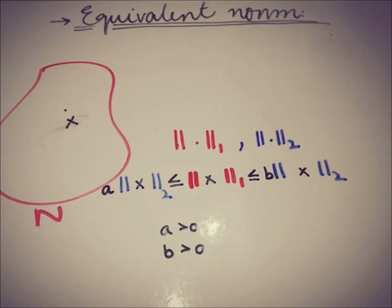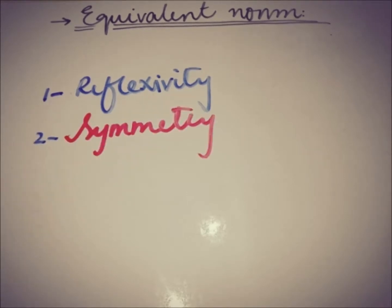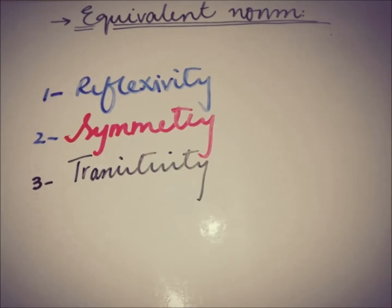Now we are going to see that the concept of equivalent norms in a normed linear space N is an equivalence relation. The three properties to verify are: reflexivity, symmetry, and transitivity. We'll deal with all of them.